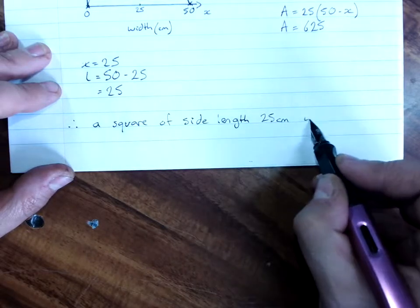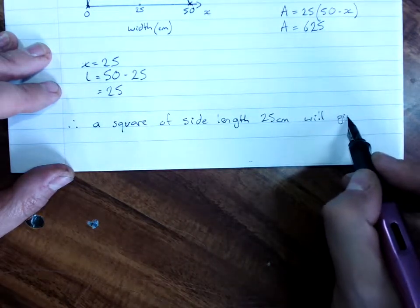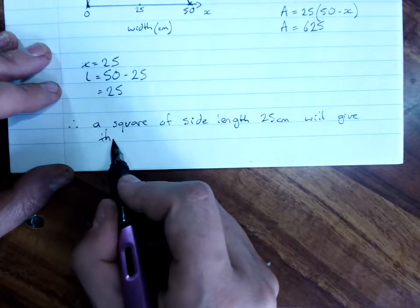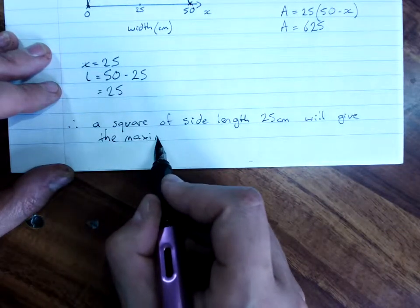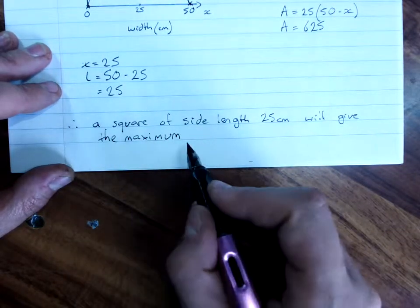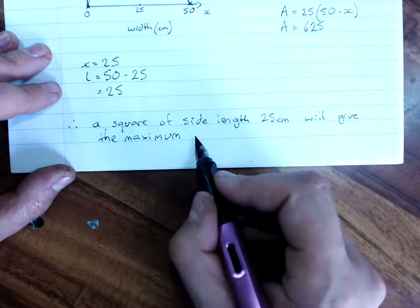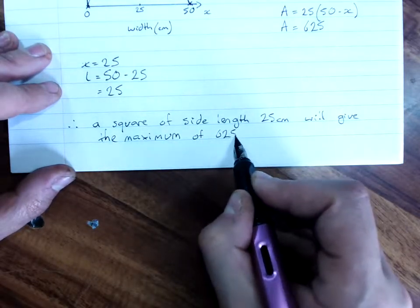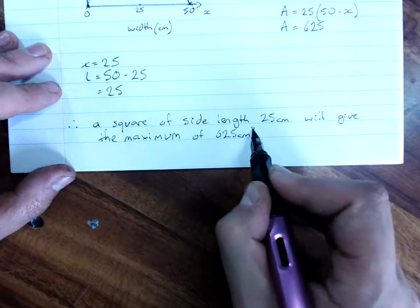Therefore, a square of side length 25 centimeters will give the maximum area, and you might as well say what it is, even though technically the question didn't ask, of 625 centimeters squared.